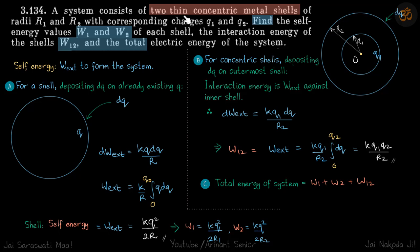We have two thin concentric metal shells, like this, with charges Q1 and Q2. We need to find the self-energy values W1 and W2 of each shell, the interaction energy between the two shells, and the total electrical energy of the system.